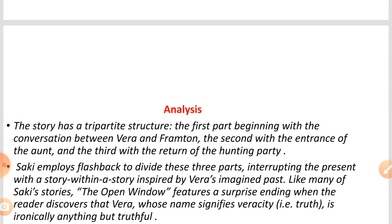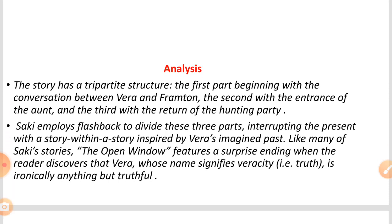The story has a three-part structure: the first part beginning with the conversation between Vera and Frampton, the second with the entrance of the aunt, and the third with the return of the hunting party. In the first introductory part there is a dialogue between Vera, the dominating character of the story, and Frampton, who comes from outside and wants to live there for some days.